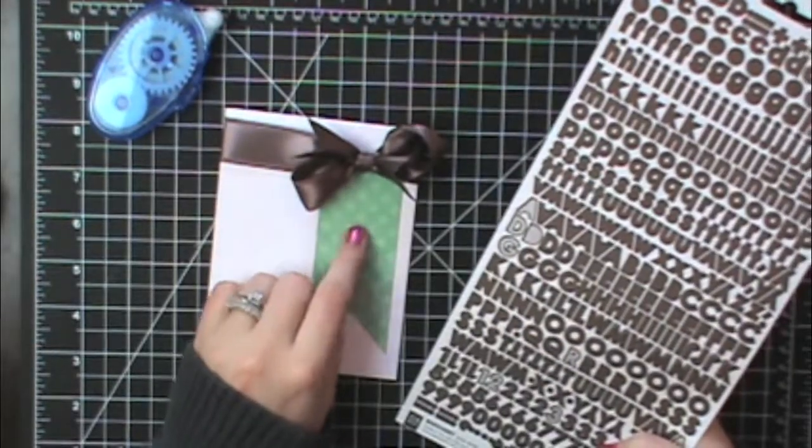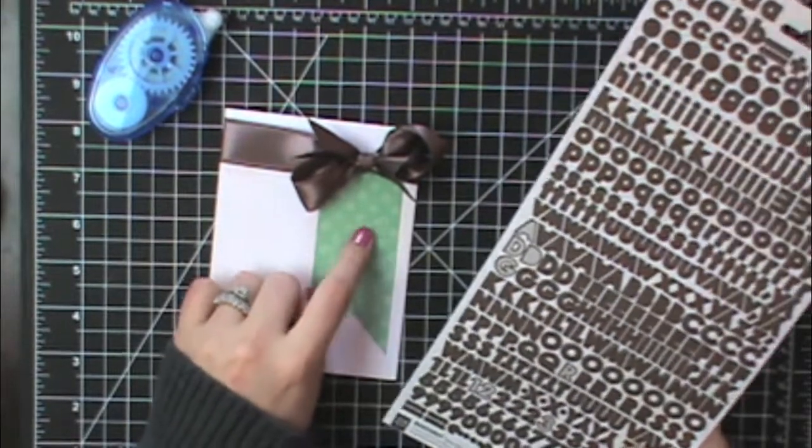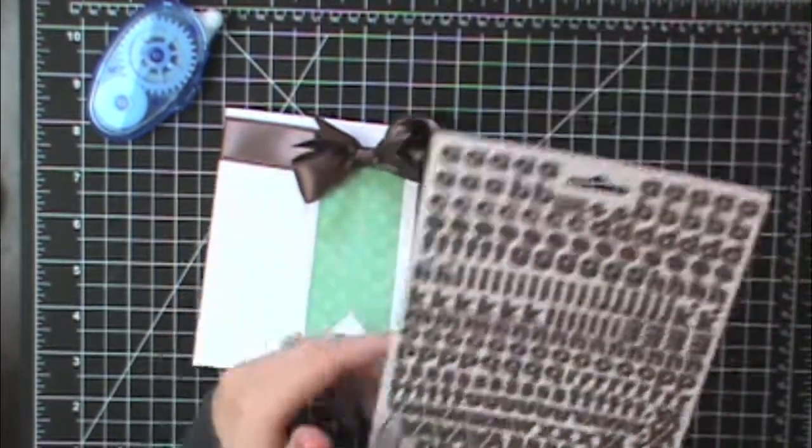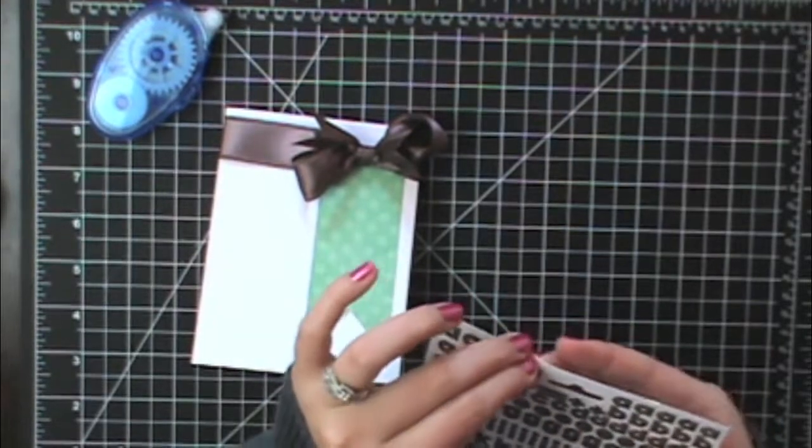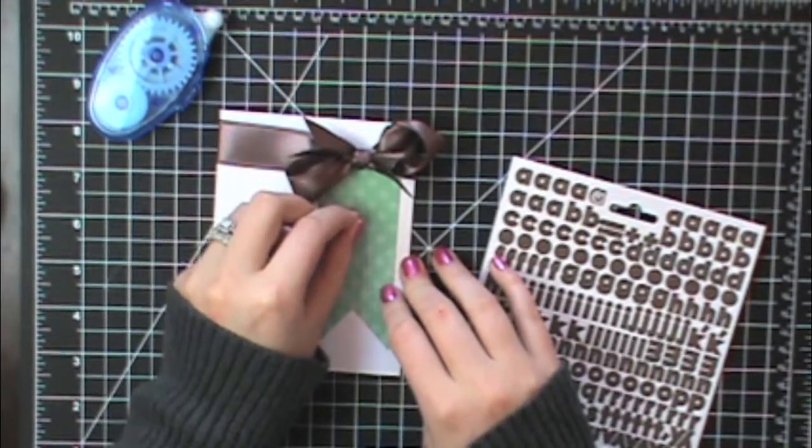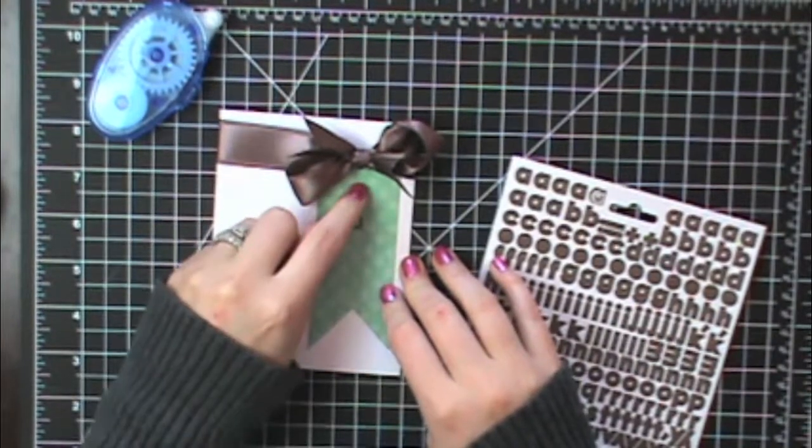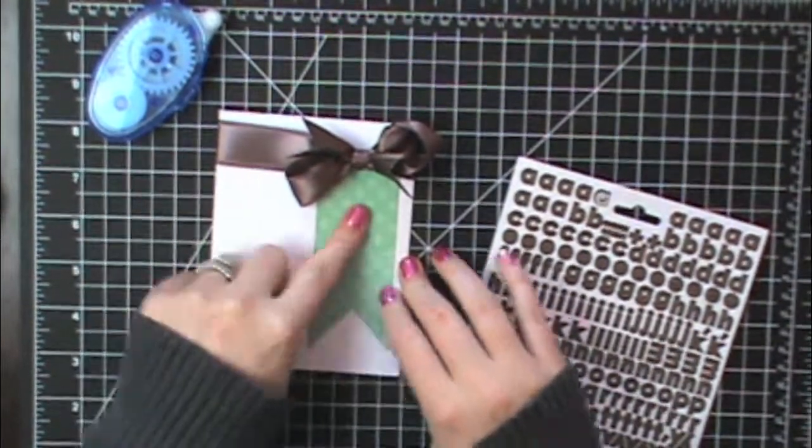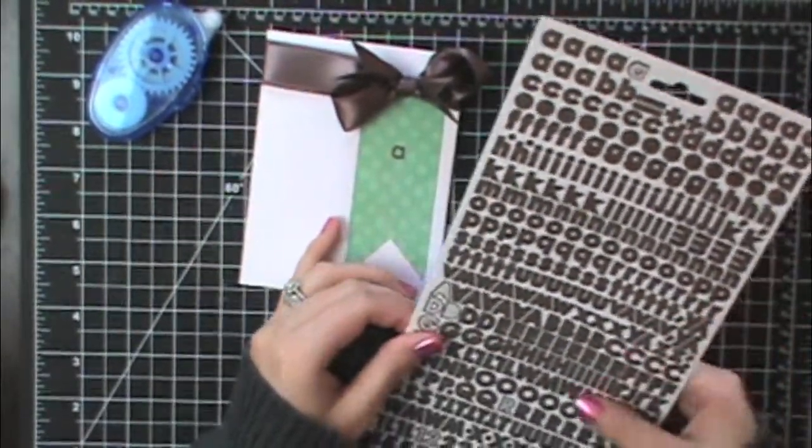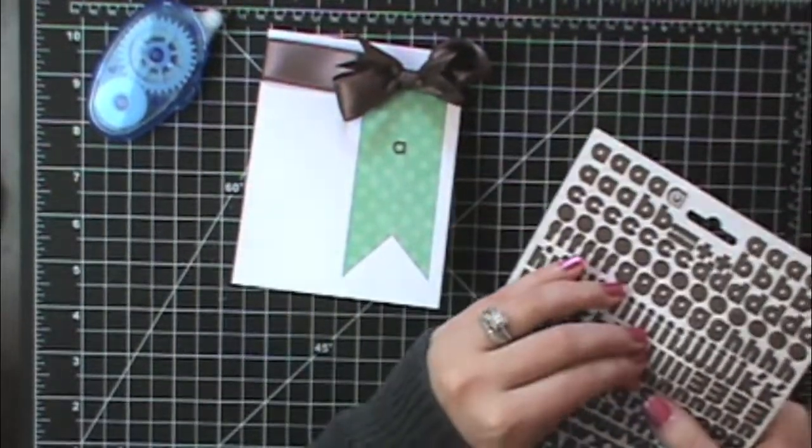I like to start with my center letter then I can line up the sentiment a lot better. So I think the center letter is A so I'll start with the A in the center. That just helps me line things up. I'm going to leave some room up at the top and at the bottom so that I can include an embellishment on this banner if I want to.